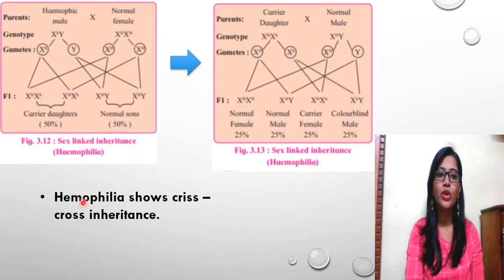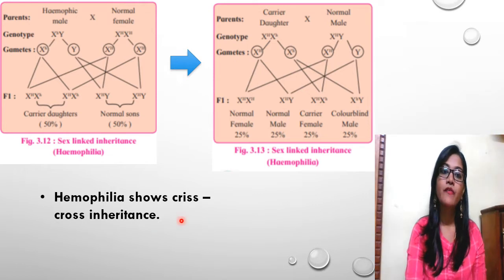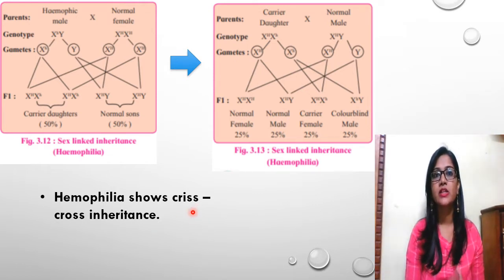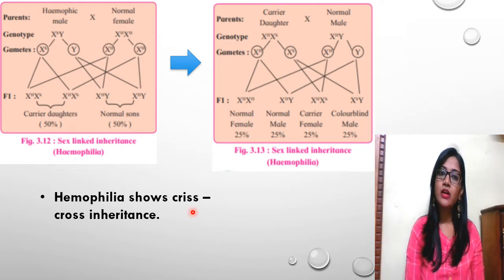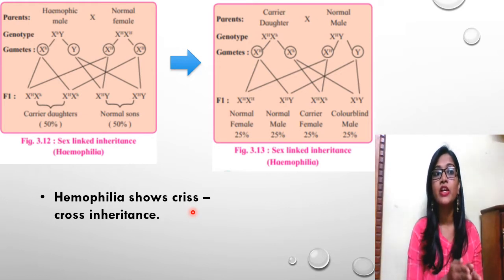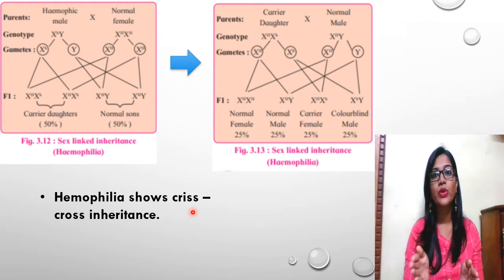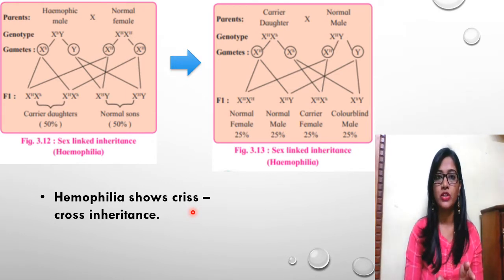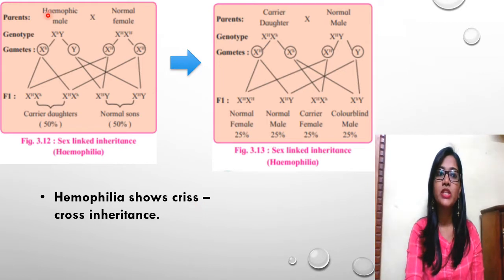In this slide, we are going to talk about how Haemophilia shows crisscross inheritance. We have studied crisscross inheritance while discussing color blindness — when a color blind father passes the character to his grandson through his daughter. In the same way, Haemophilia gets inherited from a Haemophilic father to his grandson through his daughter.